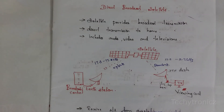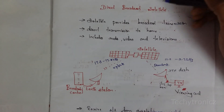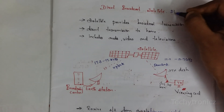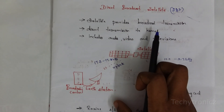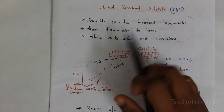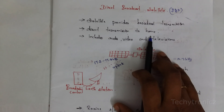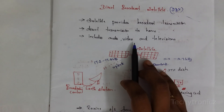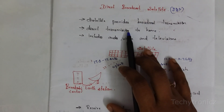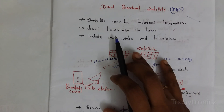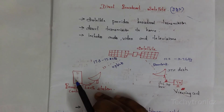In this video we are going to learn about Direct Broadcast Satellite (DBS). This satellite provides broadcast transmission which covers large areas of the earth, giving direct transmission to our home which includes audio, video, television, and some internet services.